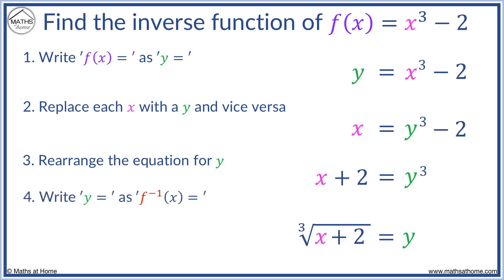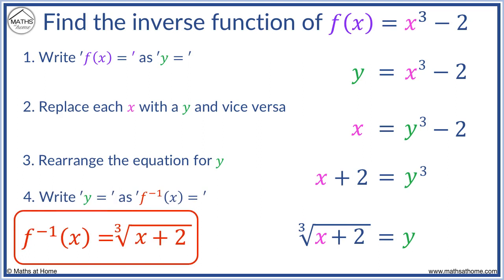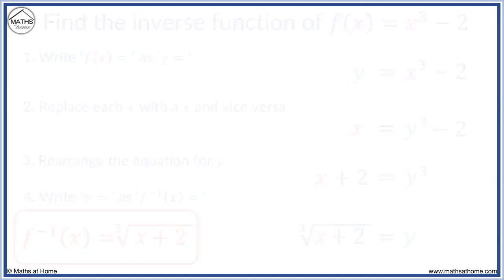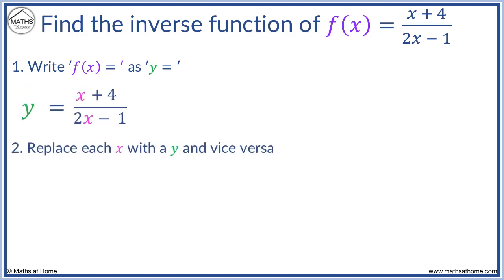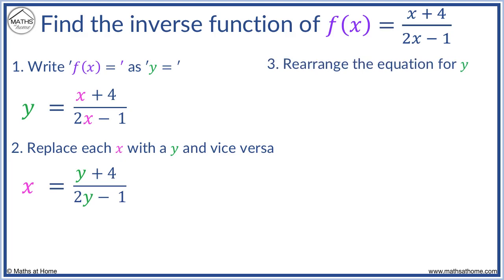Find the inverse function of f of x equals x plus 4 over 2x minus 1. We write y equals. We replace y with x and x with y — every x must be replaced with a y. Now we rearrange to get y equals. We multiply both sides by 2y minus 1 to remove the denominator of the fraction. We get x times 2y minus 1, and we are left with y plus 4.